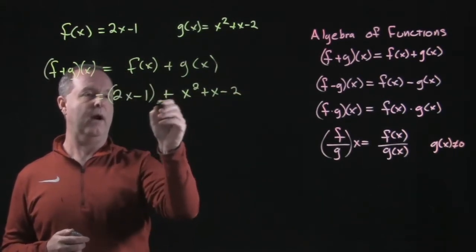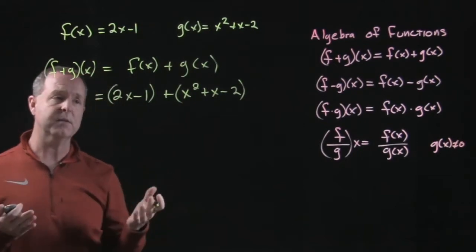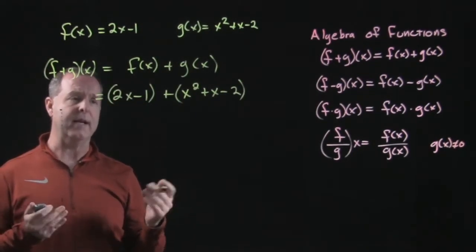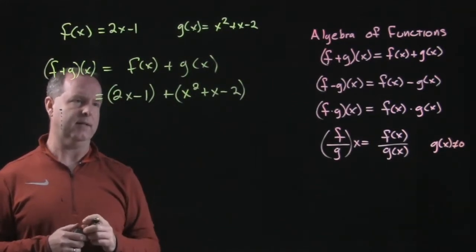And I like putting parentheses around these, so we kind of get a sense of what the two functions are, and also to keep them separated in case we have a distribution of a negative coming on up at some point in time.